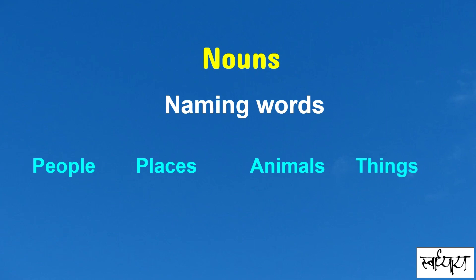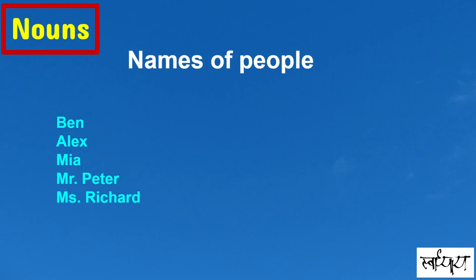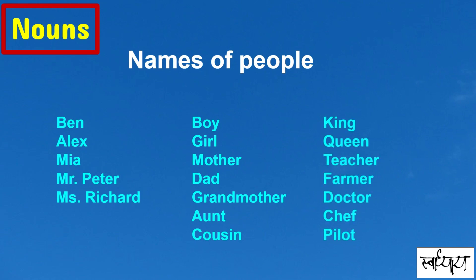Let me give you a few more examples. Names of people — a person like Ben, Alex, Mia, Mr. Peter and Miss Richard, or in general a boy, girl, mother, dad, grandfather, aunt or cousin. Or by profession like a king, queen, teacher, farmer, doctor, chef, pilot.